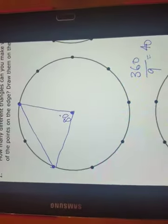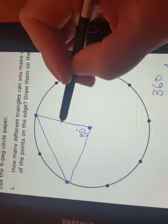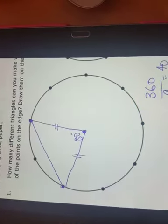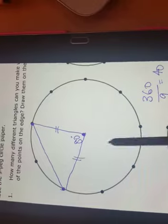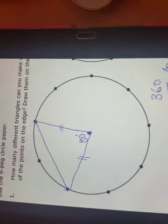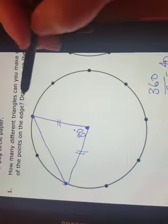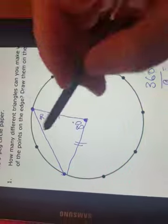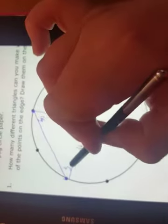Now I know this is an isosceles triangle because both of those lines are radiuses, so if that's 80, those two are the base angles that are equal, that will therefore be 50 and 50 degrees.